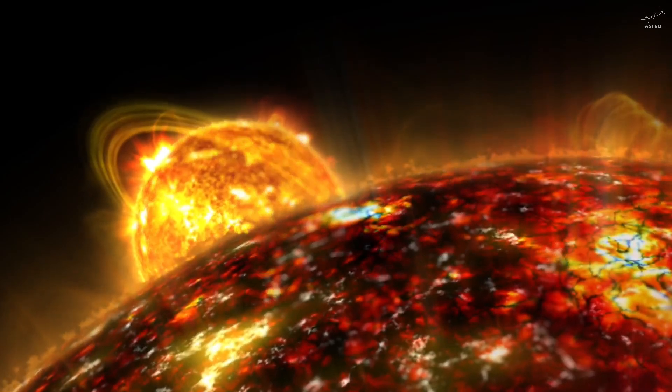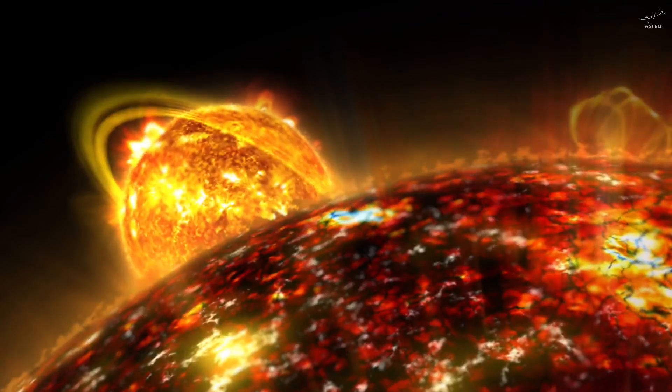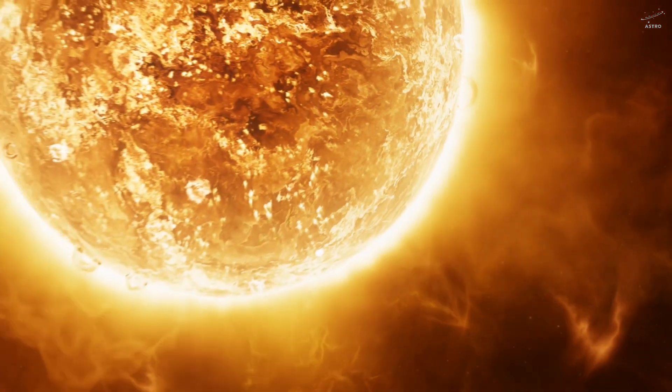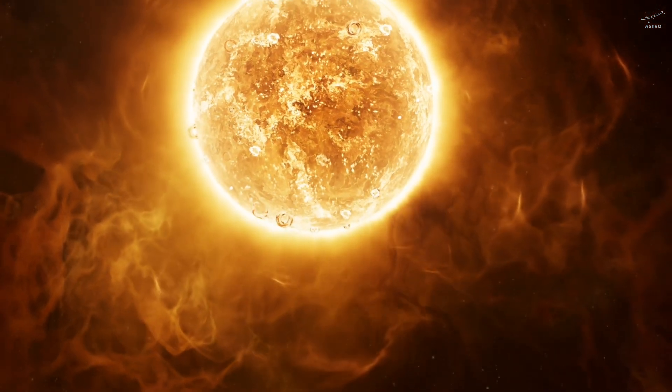On the other, the immense pressure from nuclear fusion pushes outward, fiercely resisting that collapse. If either side were to win, the sun would either implode or explode. But for most of its life, it holds steady, balanced in what scientists call hydrostatic equilibrium.